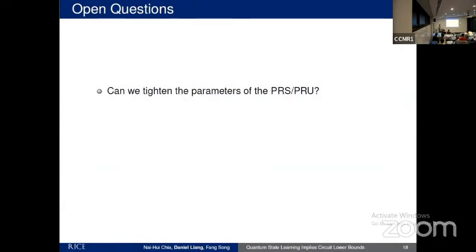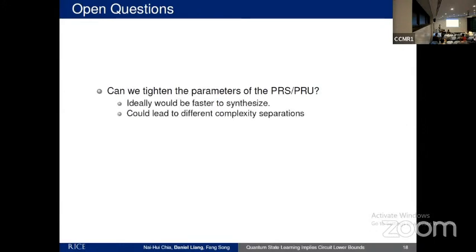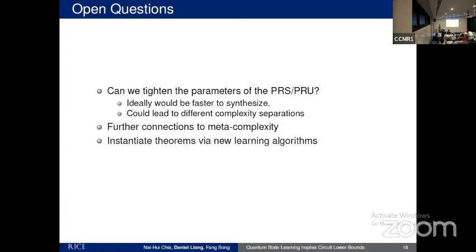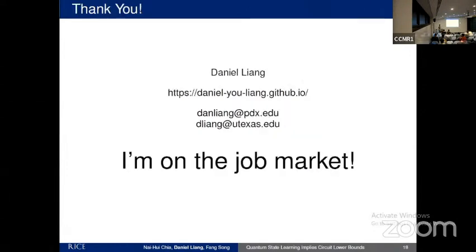That basically wraps up what I wanted to say. Open problems: can we tighten the parameters of this pseudorandom state or pseudorandom unitary — ideally constructing them in less than exponential time, getting down to polynomial time? That would lead to better complexity-theoretic separations. There are further connections to meta-complexity from predecessor works on classical Boolean functions that we haven't fully explored. And a call to the learning community: can you create some of these non-trivial algorithms to instantiate these theorems — do slightly better than brute force or slightly better than classical shadows? Also, I'll be finishing my postdoc in 2025, so if you have academic positions you think I'd be a good fit for, please let me know.